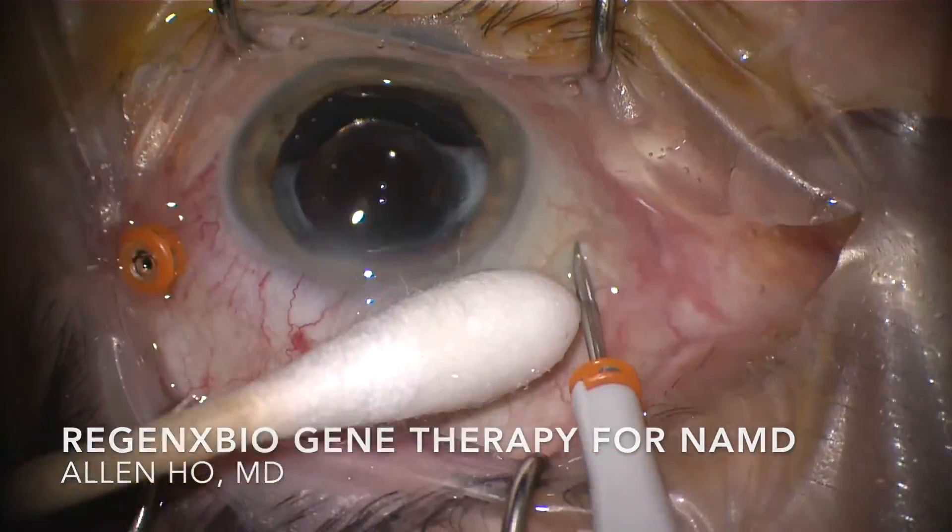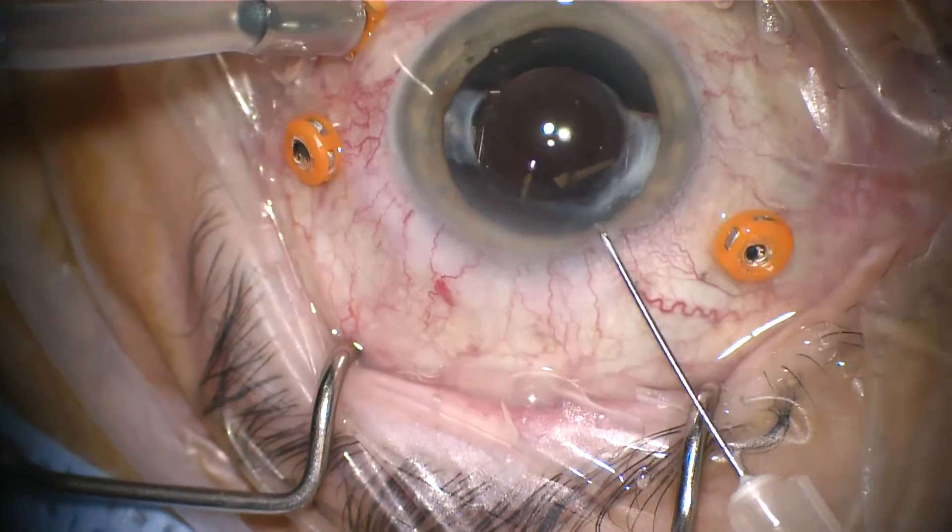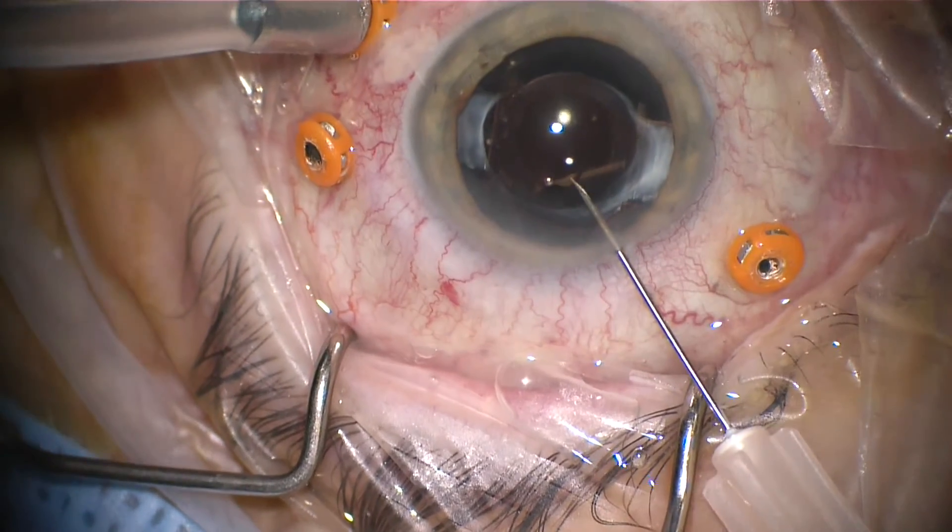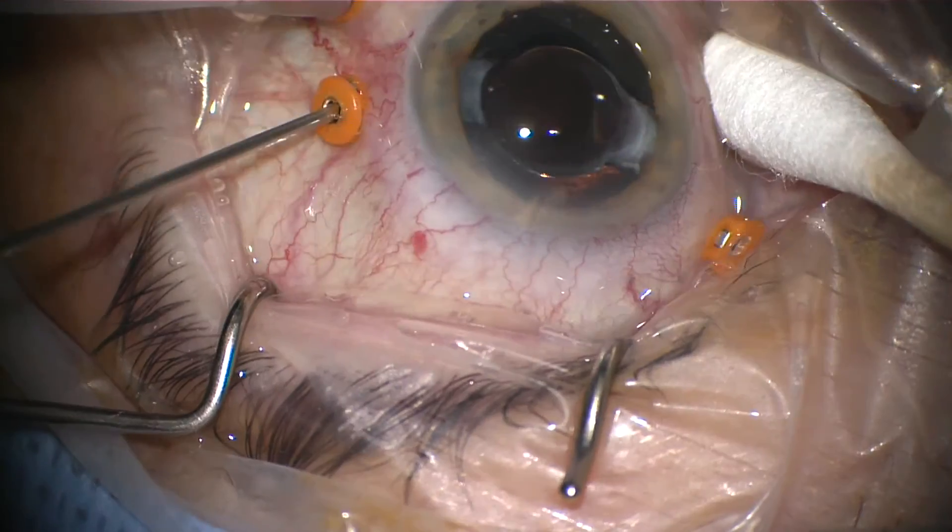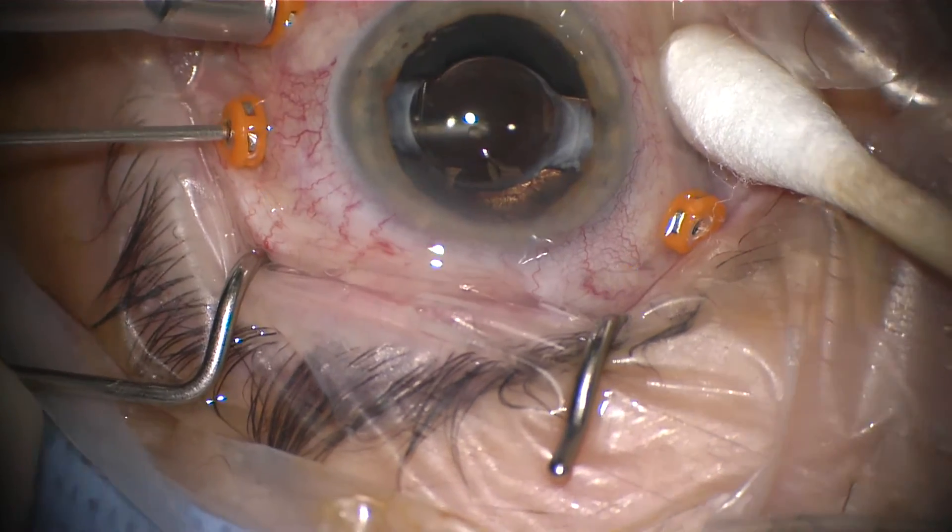Standard 3-port pars plana vitrectomy is performed and pure anterior chamber and vitreous samples are obtained to check for neutralizing antibodies to the viral vector AAV8.